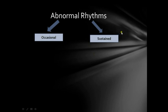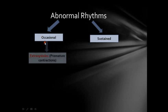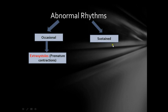Sustained means the abnormality in the rhythm persists. Occasional abnormal beats are called extrasystoles, or premature contractions — just one abnormal beat and right after that it returns to the normal sinus rhythm. We will be discussing this category in a separate video.